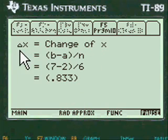We're going to do 6 intervals. And change of x is b minus a, that's the upper limit minus the lower, divided by the number of intervals. And that equals .833.